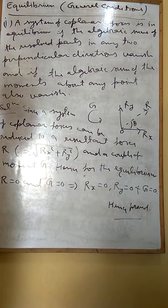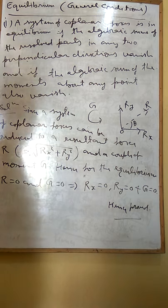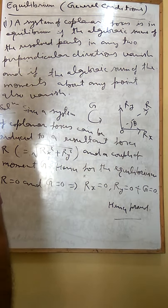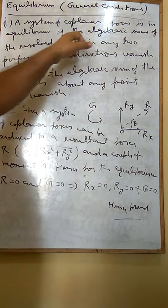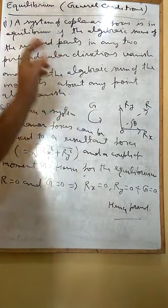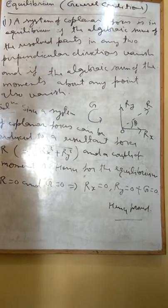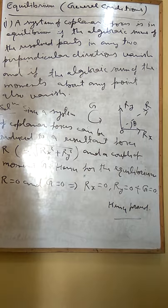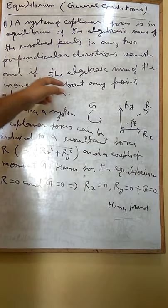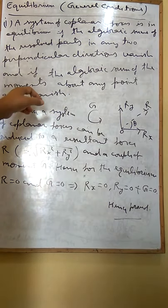Equilibrium. First, there are three conditions. The first one: a system of coplanar forces is in equilibrium if the algebraic sums of the resolved parts in any two perpendicular directions vanish, and if the algebraic sum of the moments about any point also vanish.